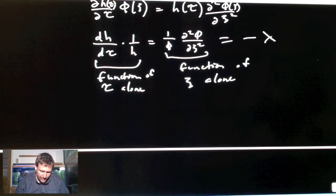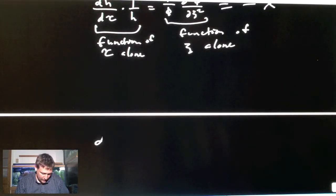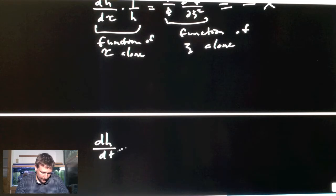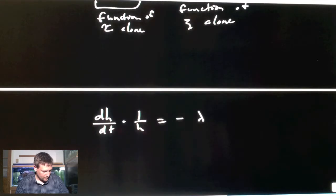Let's look at the H term first. So we have dH/dτ times 1 over H equals minus λ.